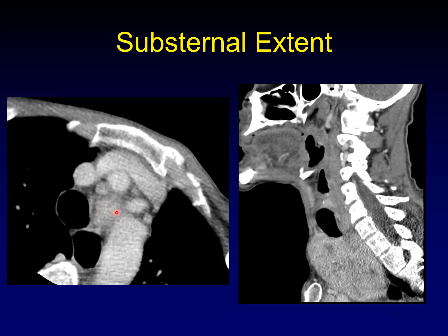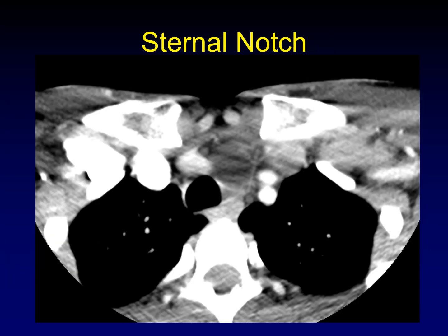Here's another example — I would say there is substernal extent to the level of the origin of the great vessels. A sagittal reconstruction can be helpful to show the lower extent of the lesion and give anatomic reference points. What if a mass extends between the heads of the clavicles but not quite underneath the manubrium sterni? That is not substernal extent — I need to see the manubrium sterni on the same cut as the mass. In that situation, I'll say the mass extends into the sternal notch, but I'm not going to say there is substernal extension.